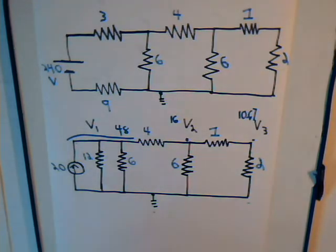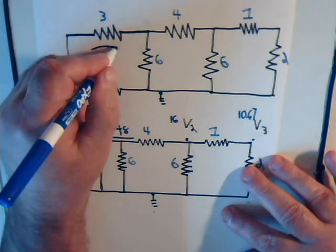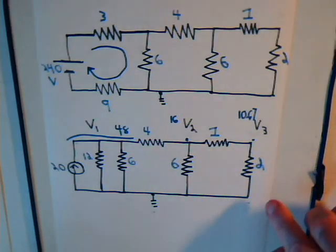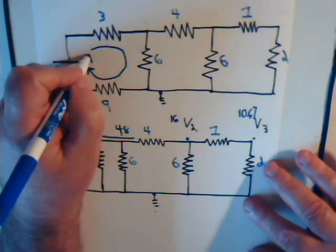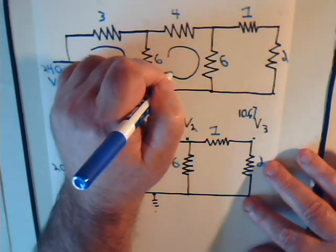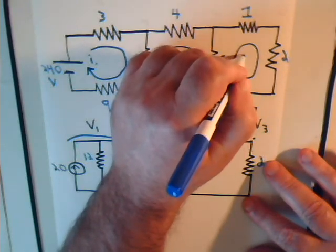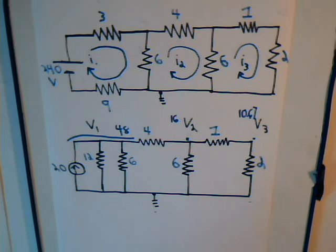For right now, we just want to determine what the three mesh currents are. Using the format technique, we always start by drawing the mesh currents in a clockwise direction. This gives us mesh currents I1, I2, and I3. We'll use the format technique developed in previous videos.